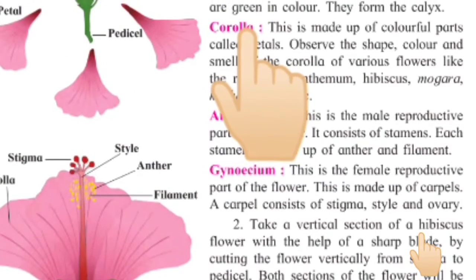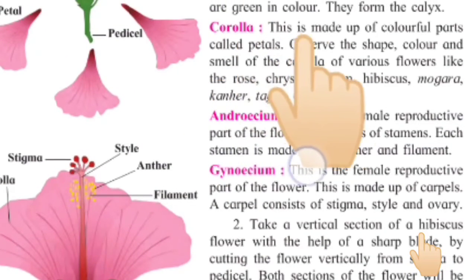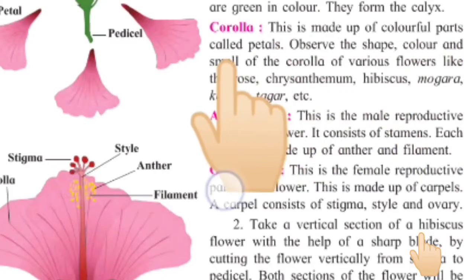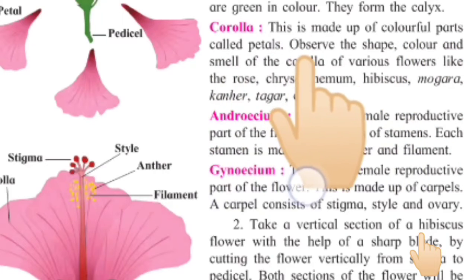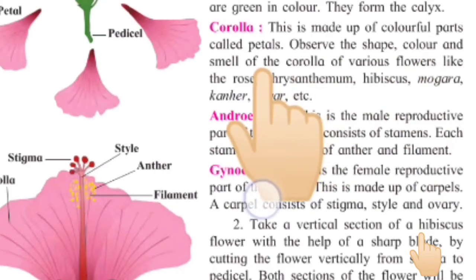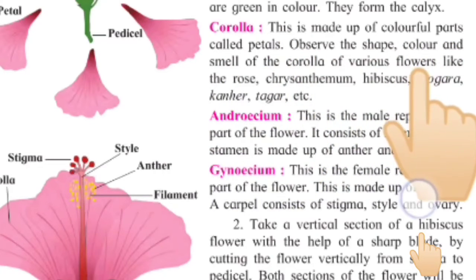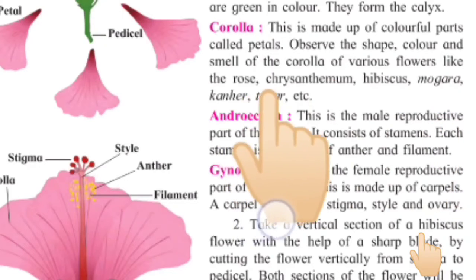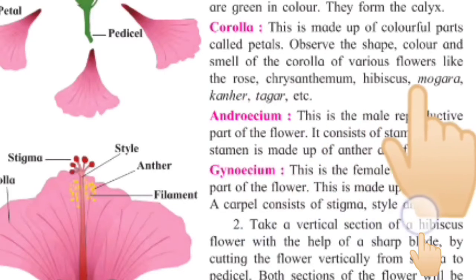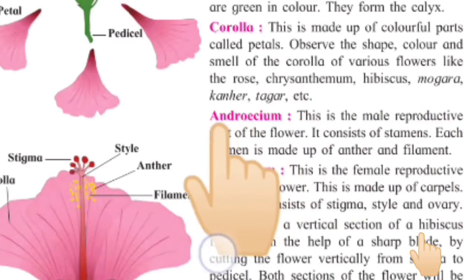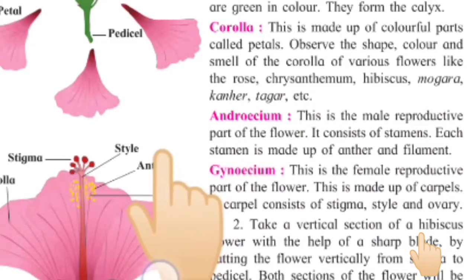Then comes the corolla. The corolla is made up of colorful parts called petals. Observe the shape, color, and smell of the corolla of various flowers, like rose, chrysanthemum, hibiscus, mora, kane, tiger, etc.